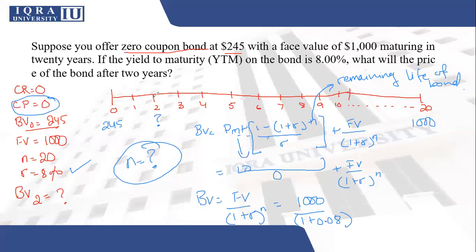This n represents the remaining life of the bond. So now if you think about it, you want the bond price at two years. So if somebody is purchasing this bond at the end of the second year, his coupon payment will start from here, year three, four, five, six. So what is the remaining life of the bond for somebody who is purchasing the bond at year two? It's going to be 18 years. Your n is going to be 18 over here.